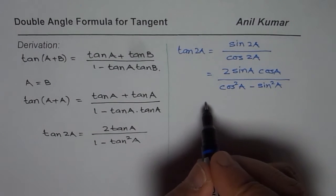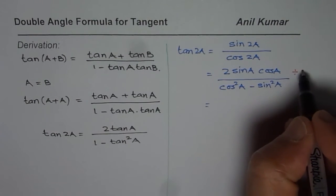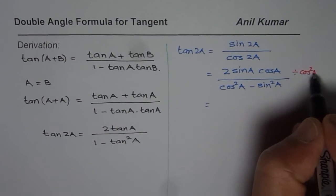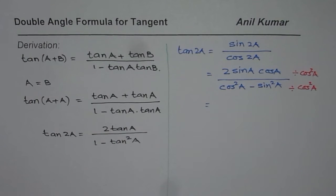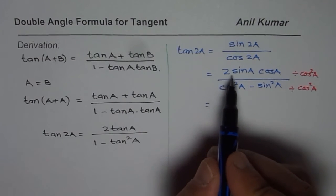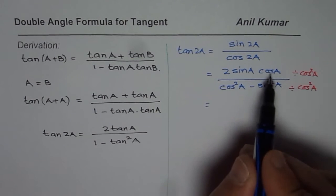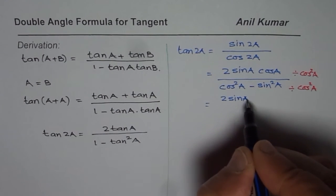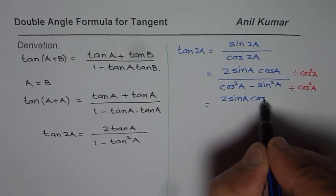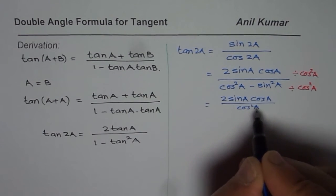Now if I divide both numerator and denominator by cos²(A), then what happens? I get 2sin(A)cos(A) divided by cos²(A). One of the cos(A)s gets cancelled. So it is 2sin(A)cos(A) divided by cos²(A). That is the numerator.